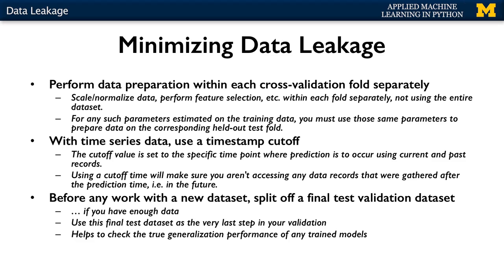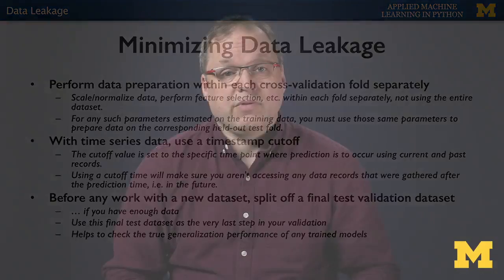If you have enough data, consider splitting off a completely separate test set before you even start working with a new dataset, and then evaluating your final model on this test data only as a very last step. The goal is similar to doing a real-world deployment — to check that your trained model generalizes reasonably well to new data. If there's no significant drop in performance, great, but if there is, leakage may be one contributing factor along with classical overfitting. For more real-world examples, analysis, and guidance about preventing data leakage, you can take a look at the optional readings provided in the lesson plan.